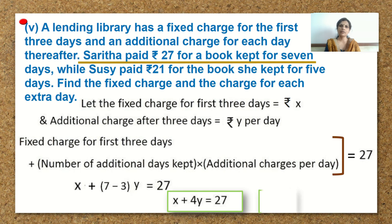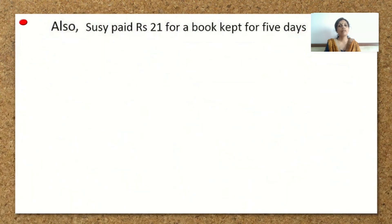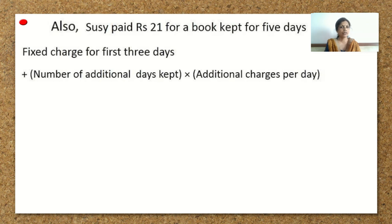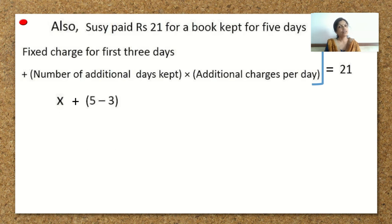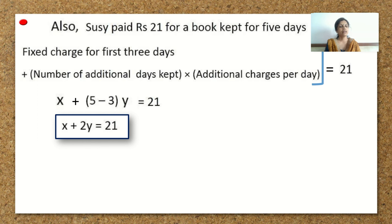So, fixed charge x plus 4 additional days times y equals 27. We get x plus 4y is equal to 27 as equation 1. For the second case, the book was kept for 5 days, so extra days are 5 minus 3 equals 2. Fixed charge x plus 2 times y equals 21, giving x plus 2y is equal to 21 as equation 2.